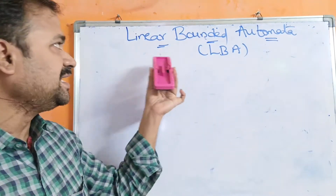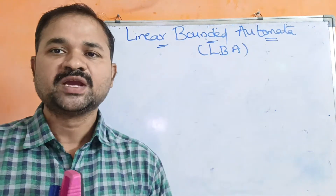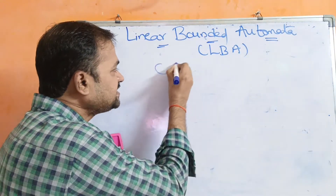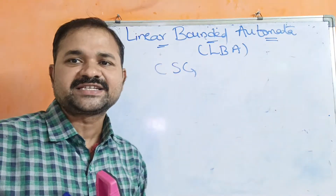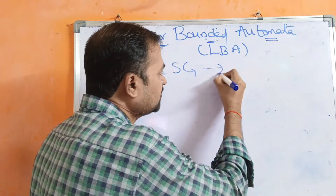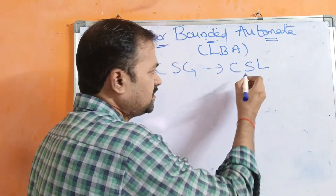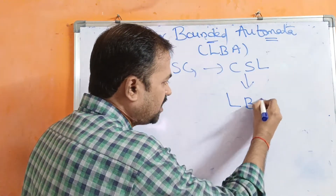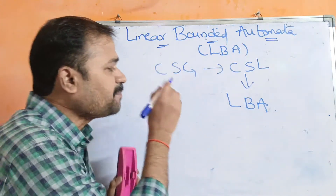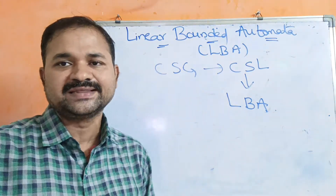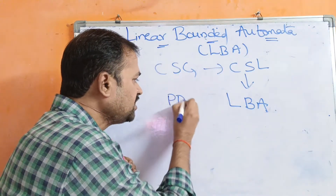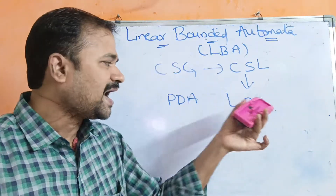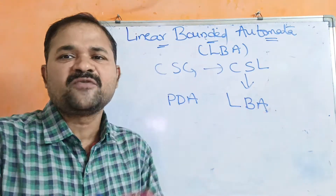Let us discuss linear bounded automata, or LBA. Context-sensitive grammar generates context-sensitive languages, and context-sensitive languages are accepted by linear bounded automata. Similarly, regular grammar generates regular languages accepted by finite automata, and context-free grammar generates context-free languages accepted by pushdown automata.